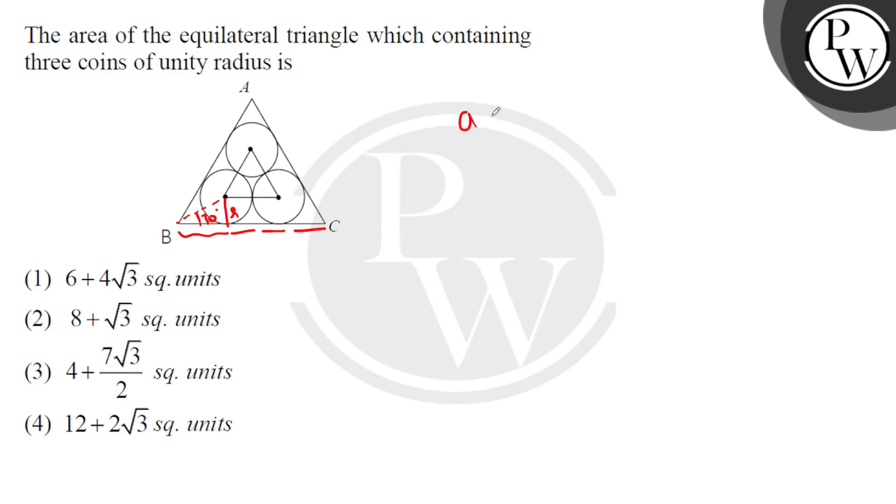So how much is the edge length here? That is, a equals 2 times r plus r over tan 30°.